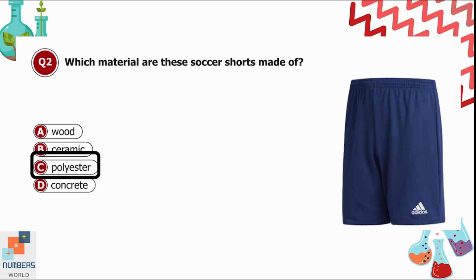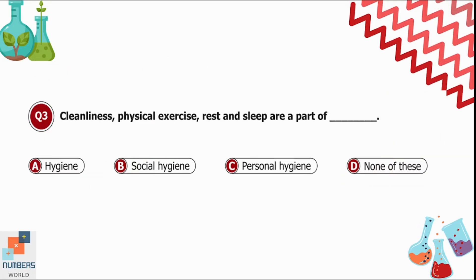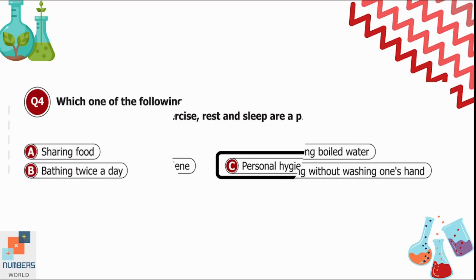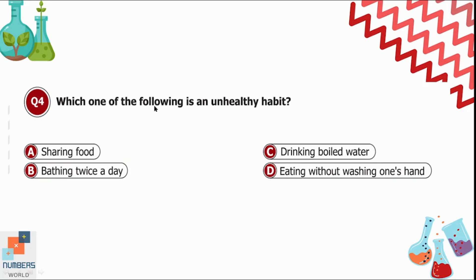Question 3: Cleanliness, physical exercise, rest, and sleep are a part of what? Option A is hygiene. Option B is social hygiene. Option C is personal hygiene. Option D is none of these. Cleanliness, physical exercise, taking rest, and sleeping are all part of personal hygiene — it is for our well-being. Option C is correct.